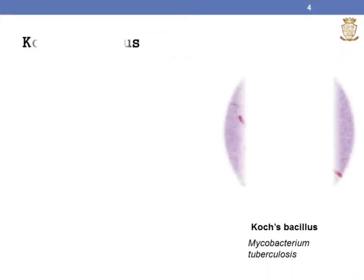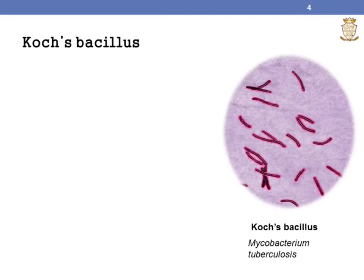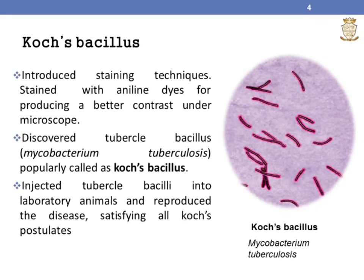The next discovery of Koch is the staining technique. He introduced a staining technique where he prepared dried bacterial films smeared on a glass slide and stained them with aniline dyes for producing better contrast under a microscope. He also discovered the tubercle bacillus, popularly known as Koch's bacillus, and injected it into laboratory animals, reproducing the disease and satisfying all Koch postulates.